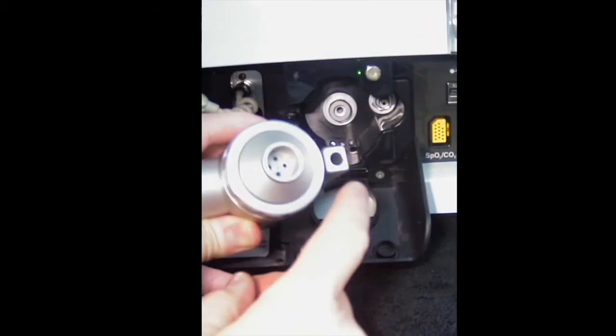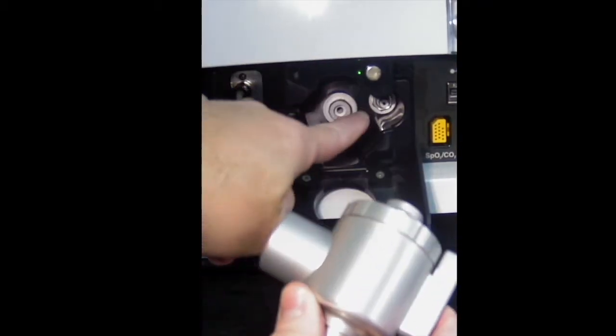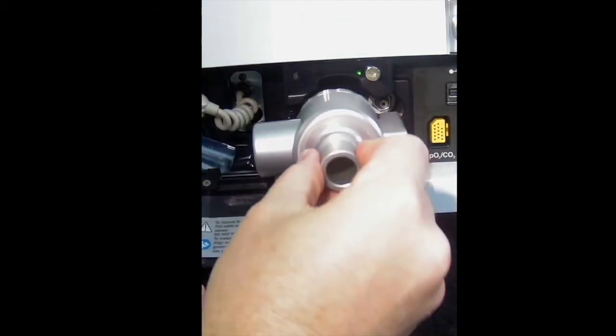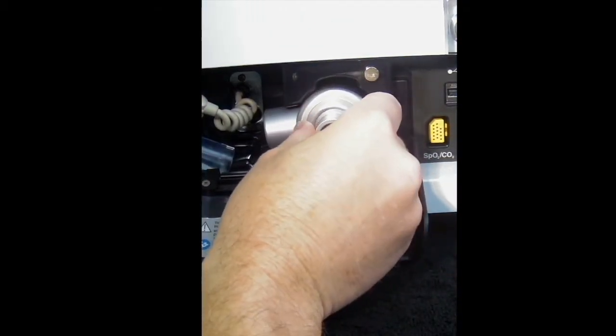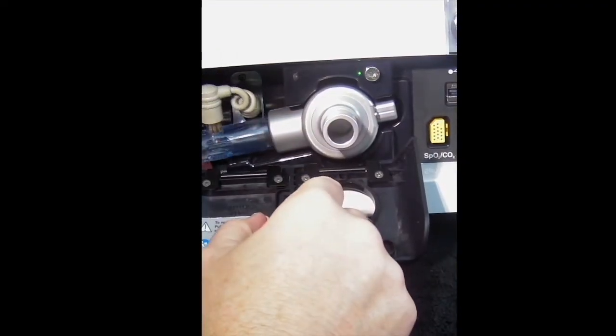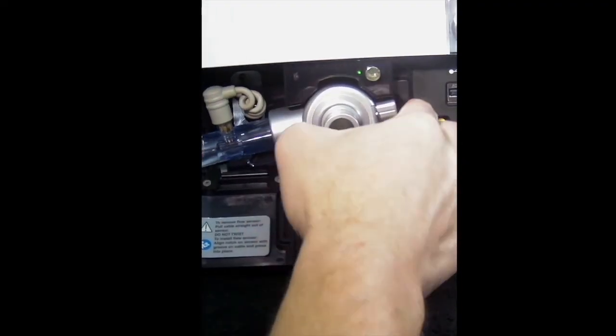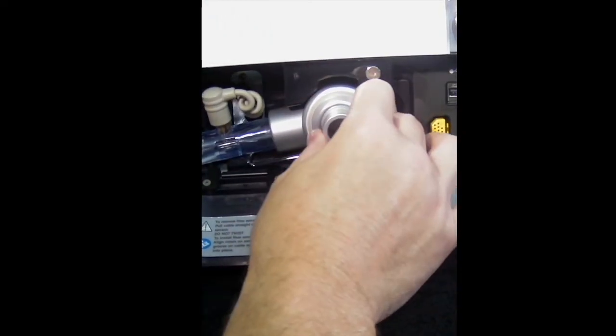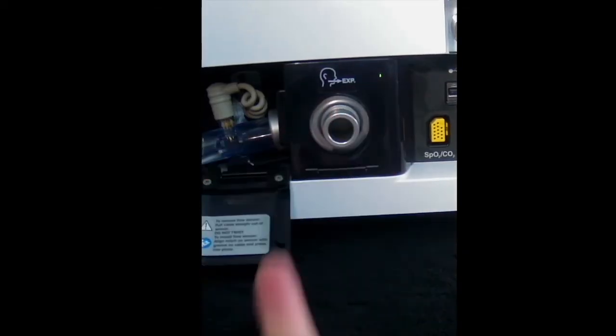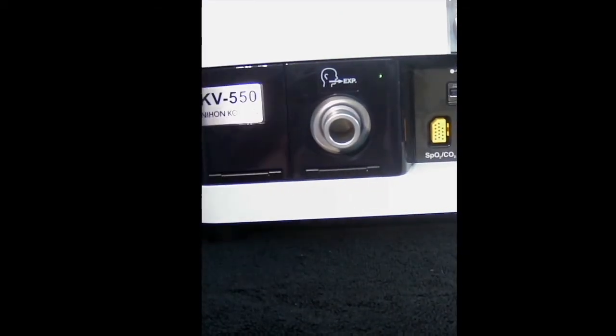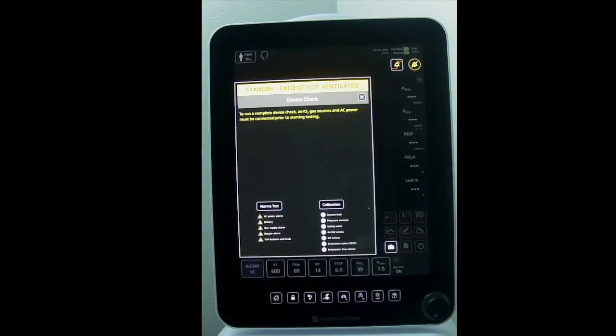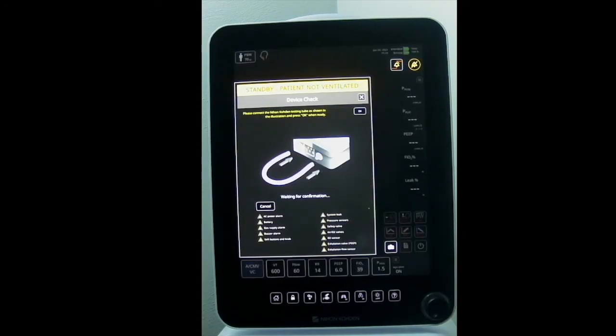I'm going to put the exhalation valve assembly back in and line it up. I'm going to point out where I line it up and push it straight in, maybe give it a little wiggle. Now the access doors should freely close. They're magnetically closed, but they should never be forced. If it takes a lot to close the door, I need to realign it. As you notice, it just easily snaps back in place. I'm going to rerun the device check and it's going to pass since I replaced that part.